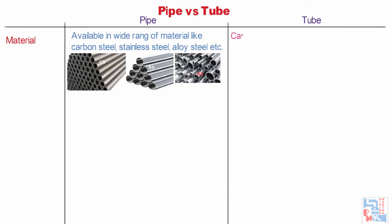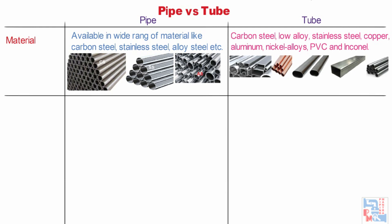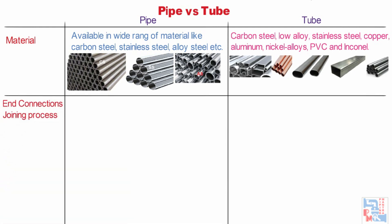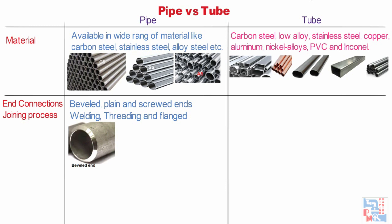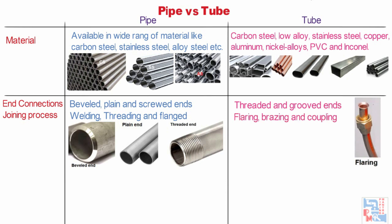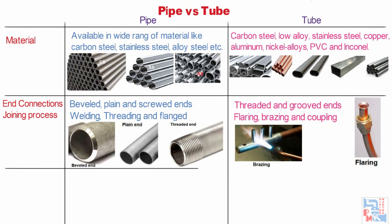For tubes, the materials available include carbon steel, low alloy, stainless steel, copper, aluminium, nickel alloy, PVC, and Incoloy. Now let's discuss end connections and joining processes. For pipe, the most common end connections are beveled, plain, and screwed ends — with welding, threading, and flange connections being very common. For tubes, threaded and grooved ends are available for quicker connections, with flaring, brazing, and coupling as joining processes.